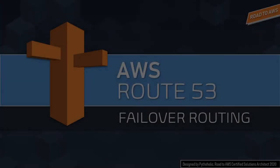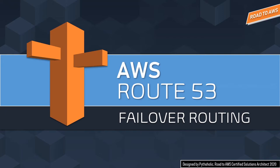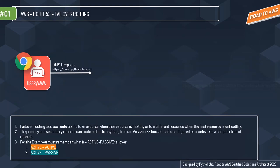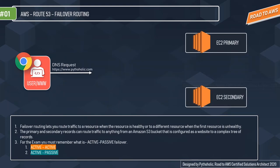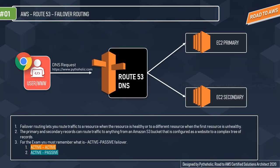Failover routing lets you route traffic to a resource when it's healthy, or to a different resource when the first resource is unhealthy. The primary and secondary resources can route traffic to anything from an Amazon S3 bucket configured as a website to a complex tree of records. Route 53 sits in between and acts as failover routing, using a health check to determine when to redirect traffic to the secondary instance.